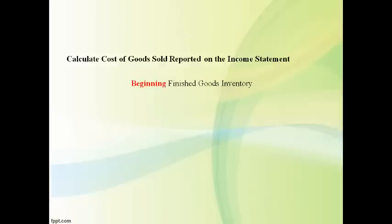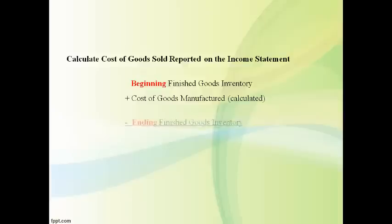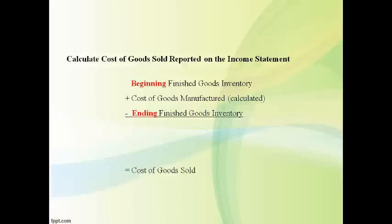Cost of goods manufactured is used to compute cost of goods sold. Start with the finished goods that are in the warehouse at the beginning of the period, then add the cost of goods that were made during the period. The first two added together give you the total goods that could have been sold. Subtract what is left at the end of the period to get the amount that was sold during the period. Goods that are not in the warehouse are sold during the period.